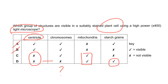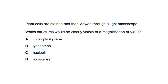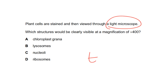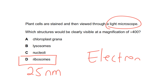In that question, chromosomes are accepted as not visible with the light microscope, but this is particular to that question — they can also be visible if the cell is undergoing nuclear division. For the last question: plant cells are stained and viewed through a light microscope at 400× magnification. We're looking for a structure seen only with the electron microscope, not the light microscope — that structure is definitely the ribosome.